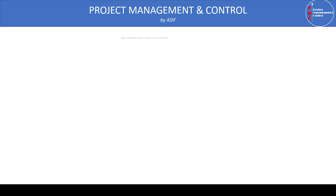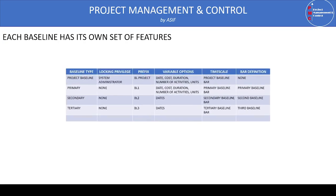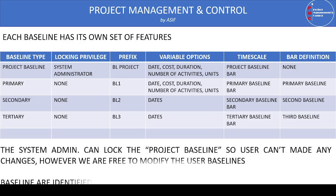As you can see in the table, there are four baseline types: project baseline, primary, secondary, and tertiary baseline. The project baseline has the privilege that only the system administrator can lock it, meaning regular users do not have authority to make changes to the project baseline. However, users can make changes to the primary, secondary, and tertiary baselines. When you assign a project as a baseline, P6 automatically provides a prefix: project baseline is labeled with 'BL Project' at the end of the project name.